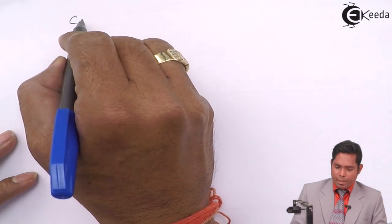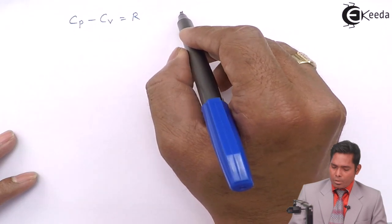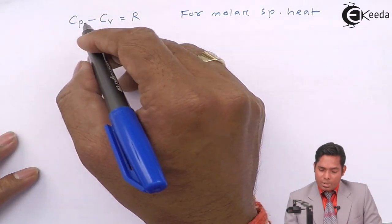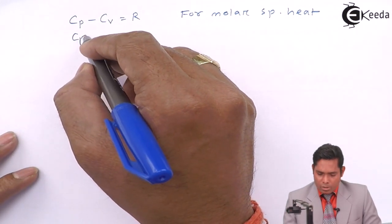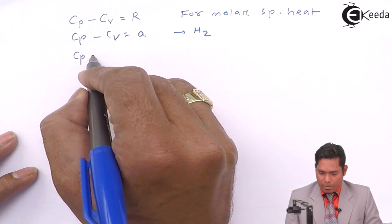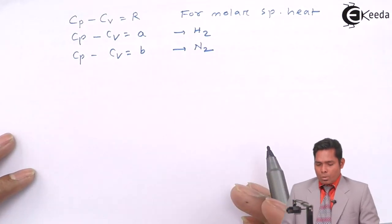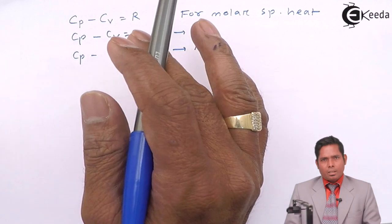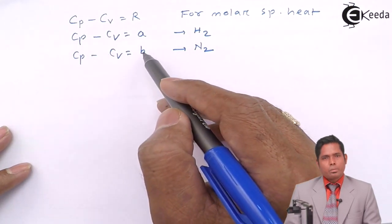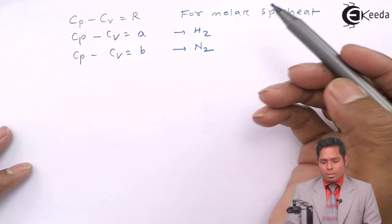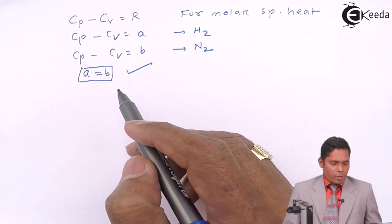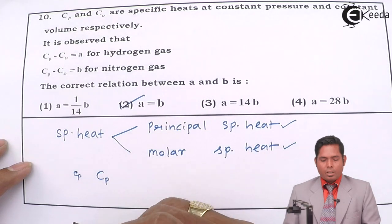If we know that Cp minus Cv is R, this is for molar specific heat. So in molar specific heat, Cp minus Cv is R. In the given question, Cp minus Cv is A for hydrogen and B for nitrogen. As we know that Cp minus Cv is R, it is always R irrespective, R is same for all gases. So here also it is R, here also it should be R. So if you compare this, then A and B will be equal. So irrespective of the nature of the gases, A equals B. If I choose this, then option number 2 is the correct answer.